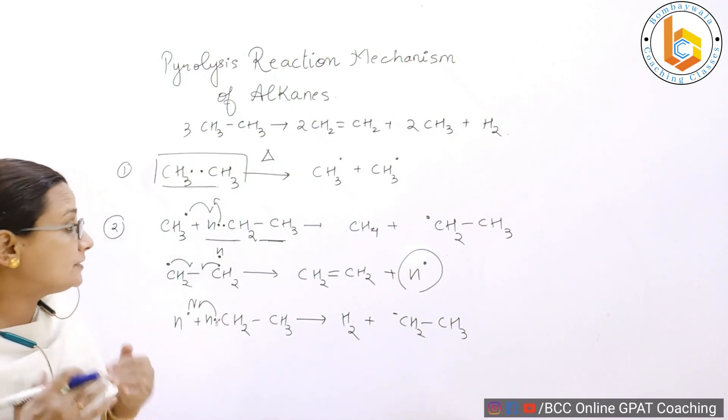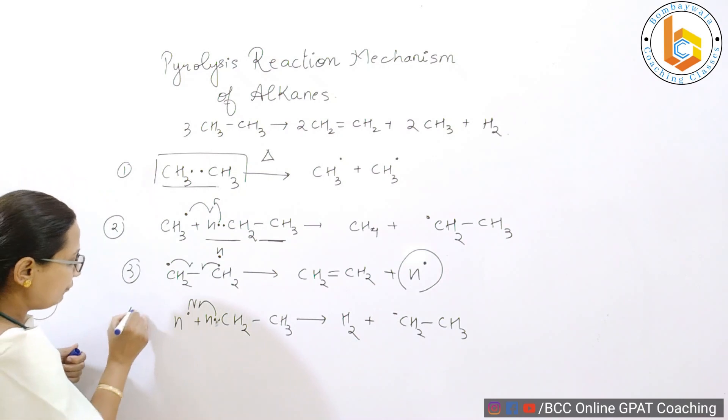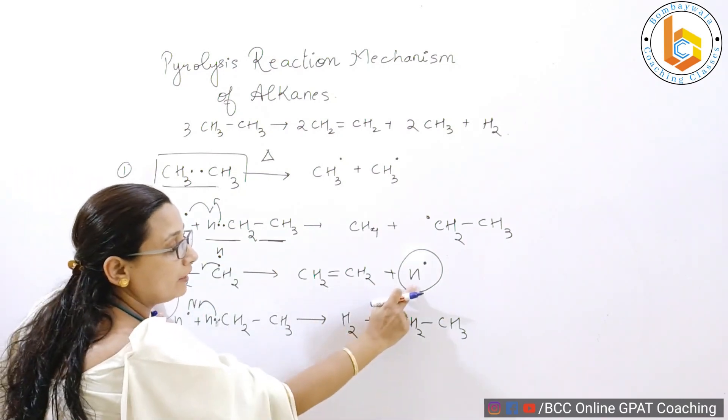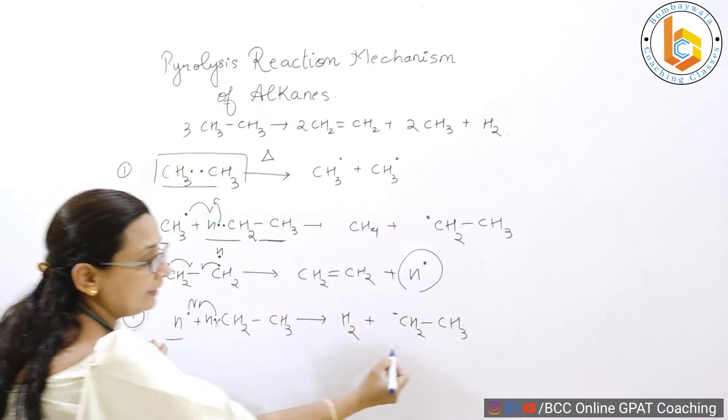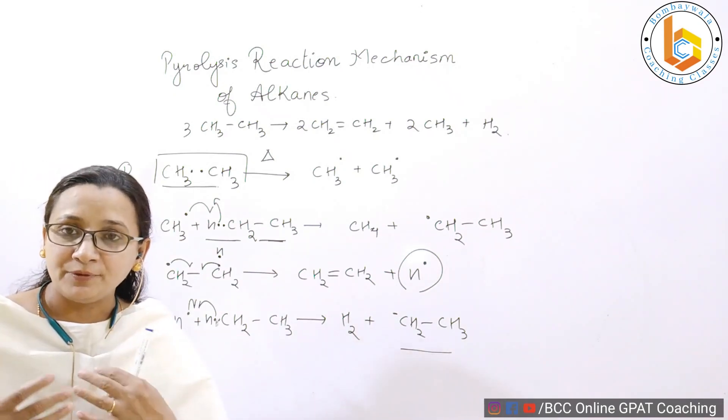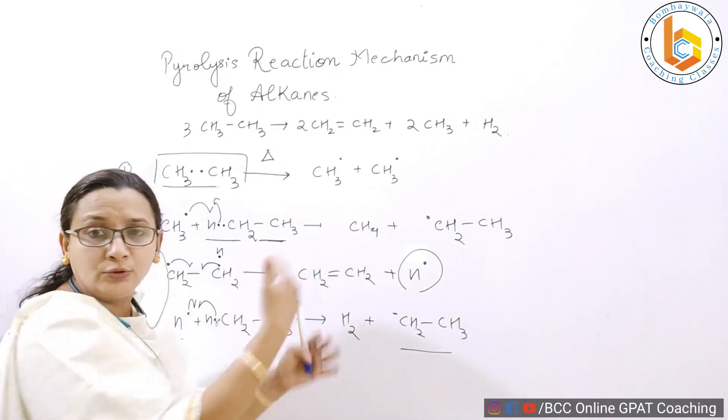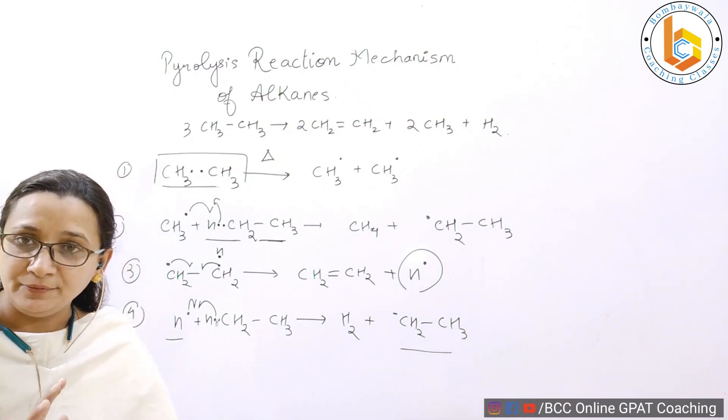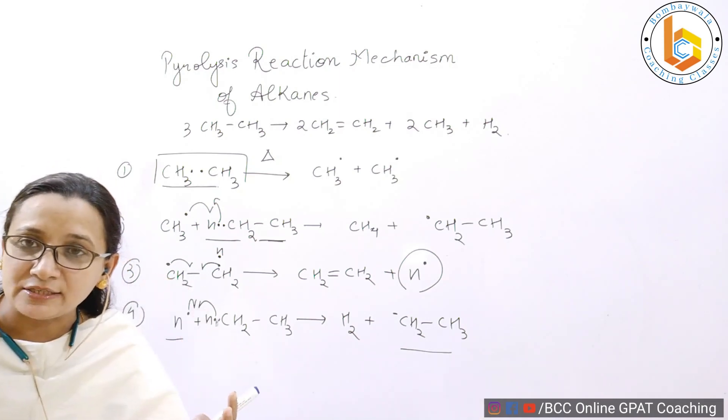Now dear students, what happens here is that the step 3 and 4, wherein we are starting from a free radical and we are ending up in another free radical. We are starting from a free radical and we are ending in another free radical. In both these steps, this is called as a propagation step. So these 3 and 4 continuously keep happening. It's a chain reaction. It will continuously happen till the time either ethane will get exhausted or hydrogen will get exhausted.